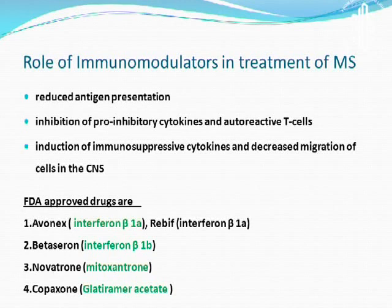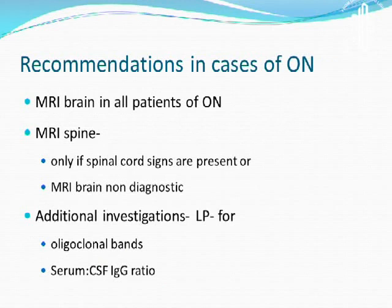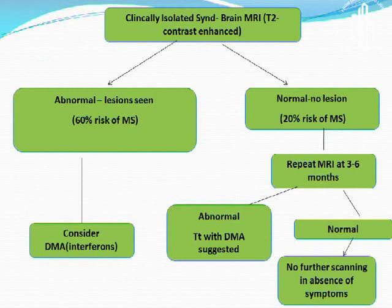The current recommendation is that in any case of optic neuritis, an MRI should be performed. If there are signs of spinal cord involvement, or if the brain MRI is normal, spinal MRI is indicated. Additional investigations like lumbar puncture may be done. For a clinically isolated syndrome including optic neuritis with a normal MRI, repeat MRI should be done after three to six months. If that is abnormal, the patient may be considered for treatment with interferons. If the initial MRI is abnormal, the risk of MS is about 60% and use of interferons should be considered.